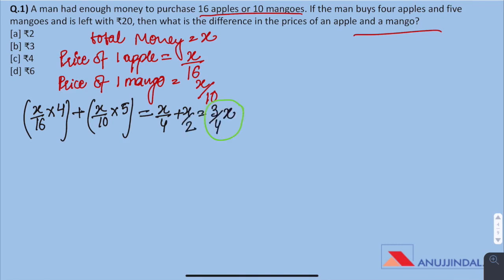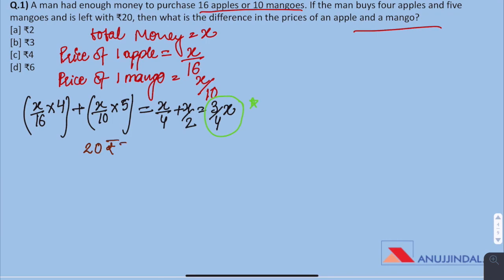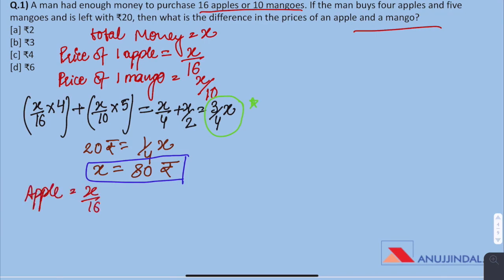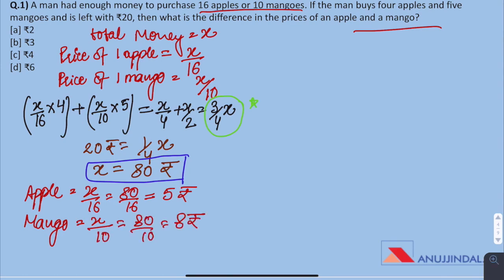He spent 3 fourths of the money and as mentioned in the question, he is left with 20 rupees. So 20 rupees equals one fourth x, meaning x equals 80 rupees. Price of 1 apple is x/16 = 5 rupees and price of 1 mango is x/10 = 8 rupees, and the difference as asked is 8 minus 5 which is 3 rupees. We solved this using only one variable x, but we can also solve it using two variables.